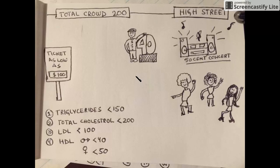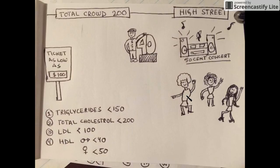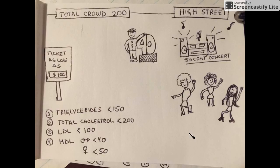Here's a quick recap of the mnemonic: total cholesterol is 200 (total crowd 200); LDL is 100 (ticket as low as $100); HDL — high street concert — in women it's 50 (three women dancing to a 50 Cent song), and in men it's 40; total triglycerides are 150 (50 plus 50 plus 50). Thank you.